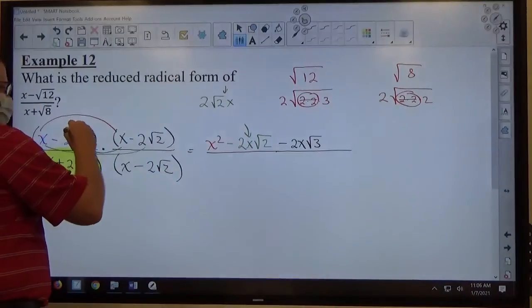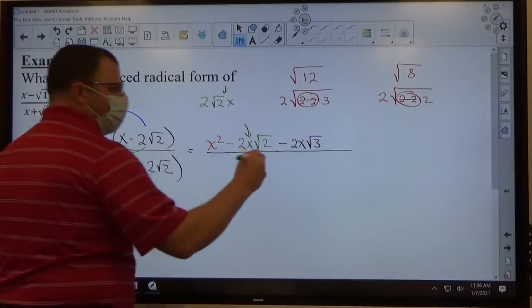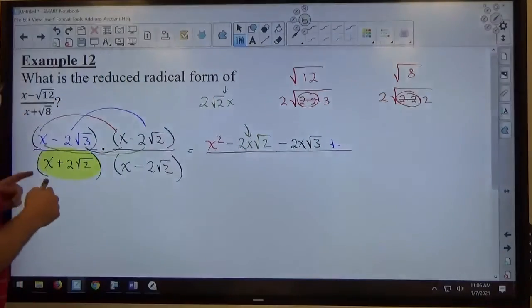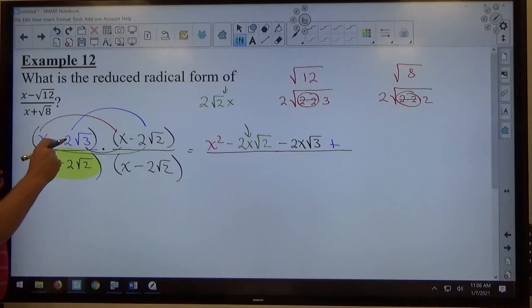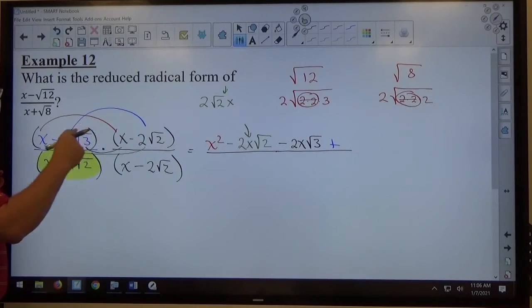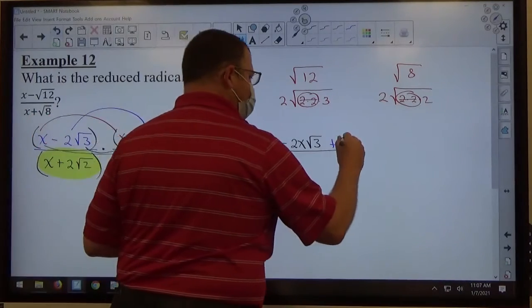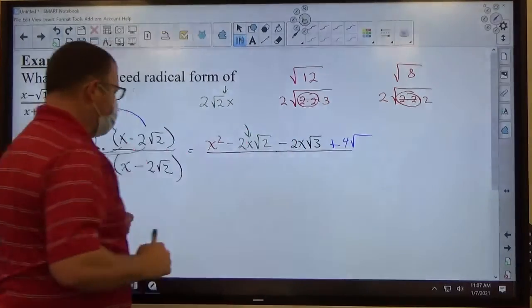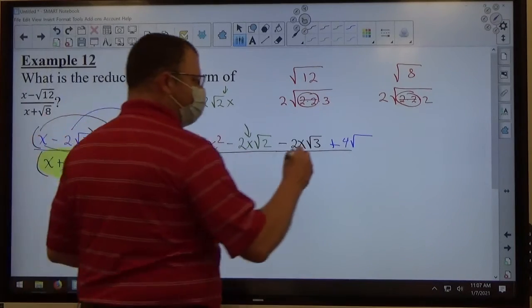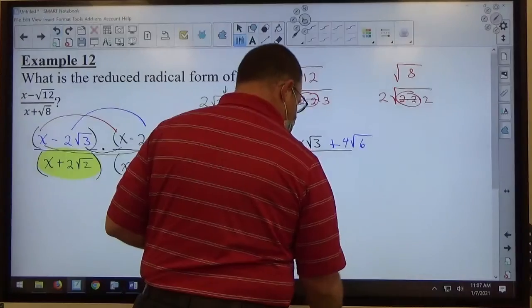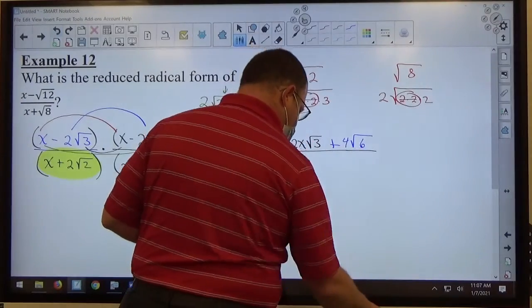I'm going to do last times last. I've got a negative times negative makes a positive. And notice I've got a whole number radical times whole number radical structure. So whole number times whole number, 2 times 2 makes 4. For the radicals, 3 and 2 are primes that are different, so there's no way to get perfect pairs in there. So I can go ahead and multiply 3 times 2 makes 6. Okay, so there's the top done.